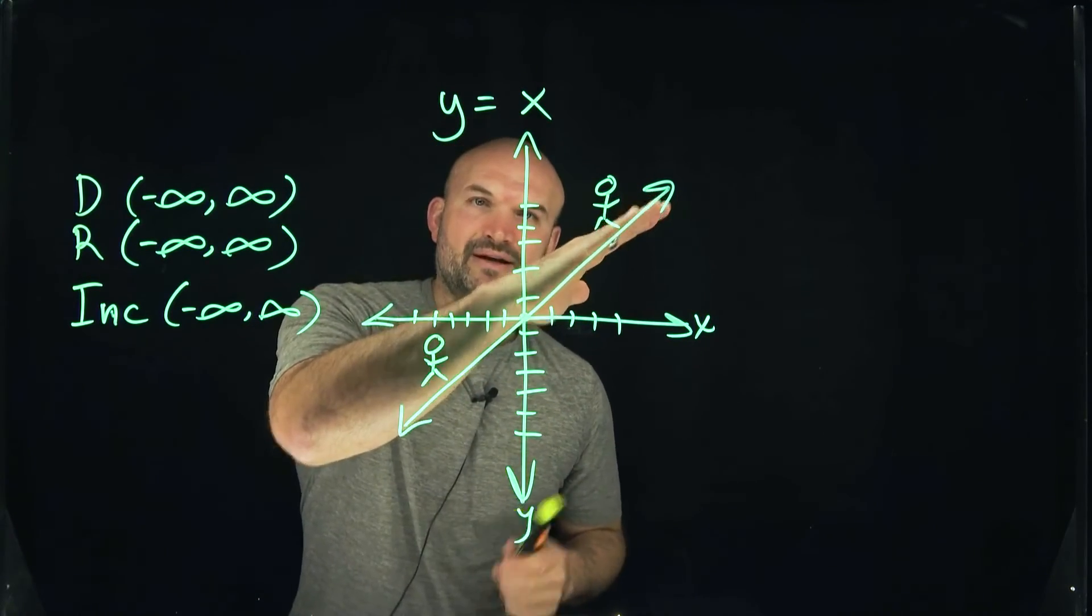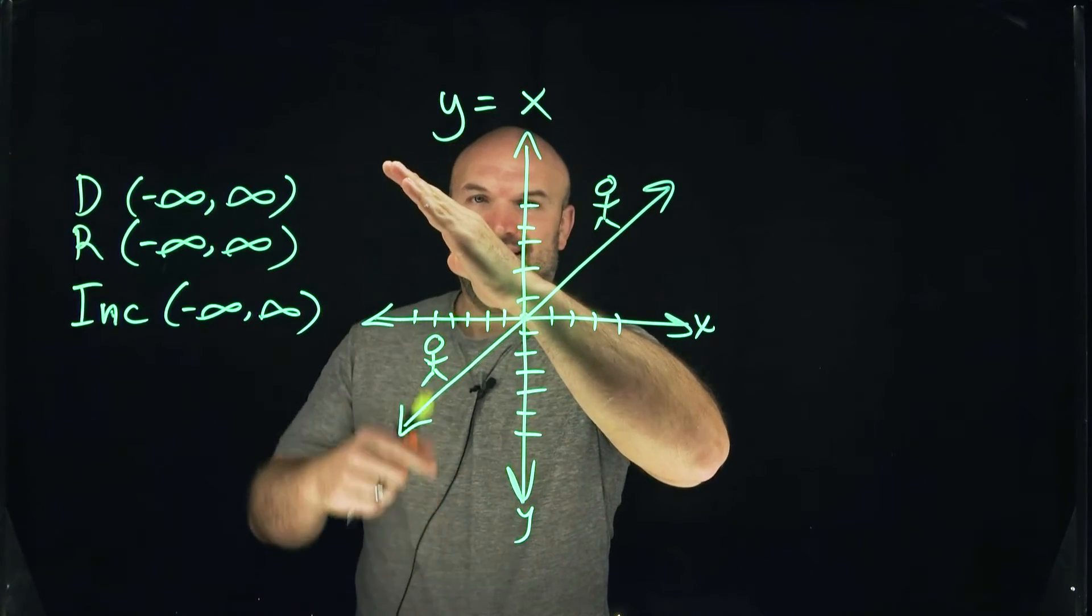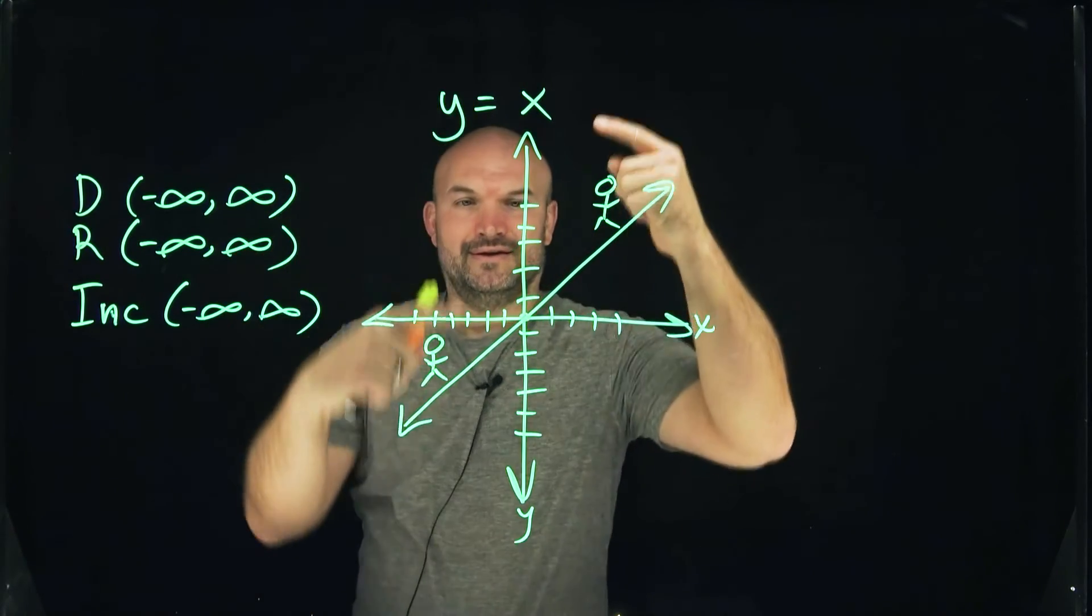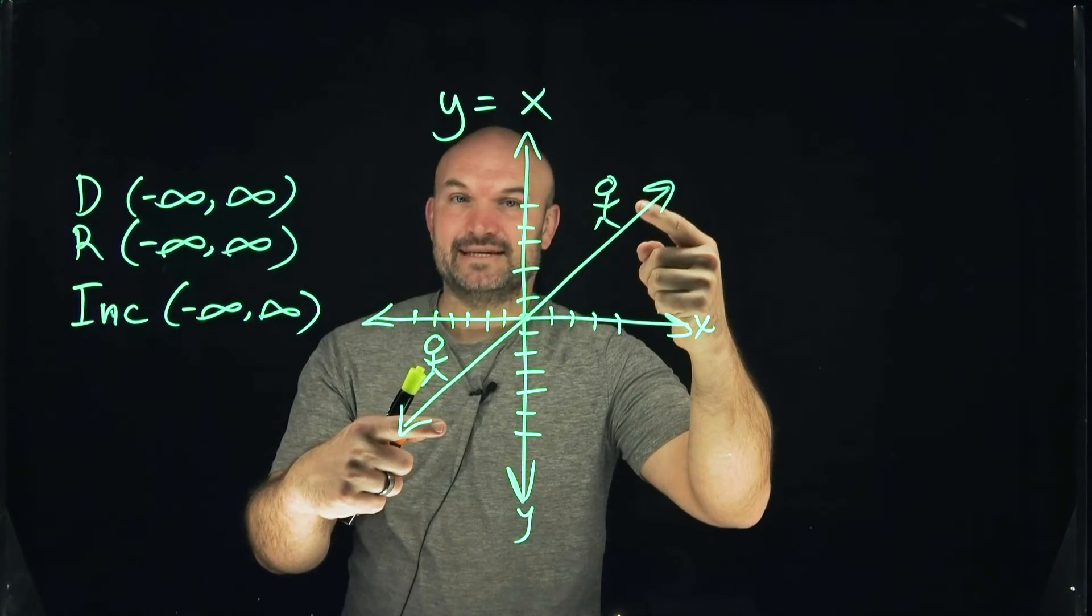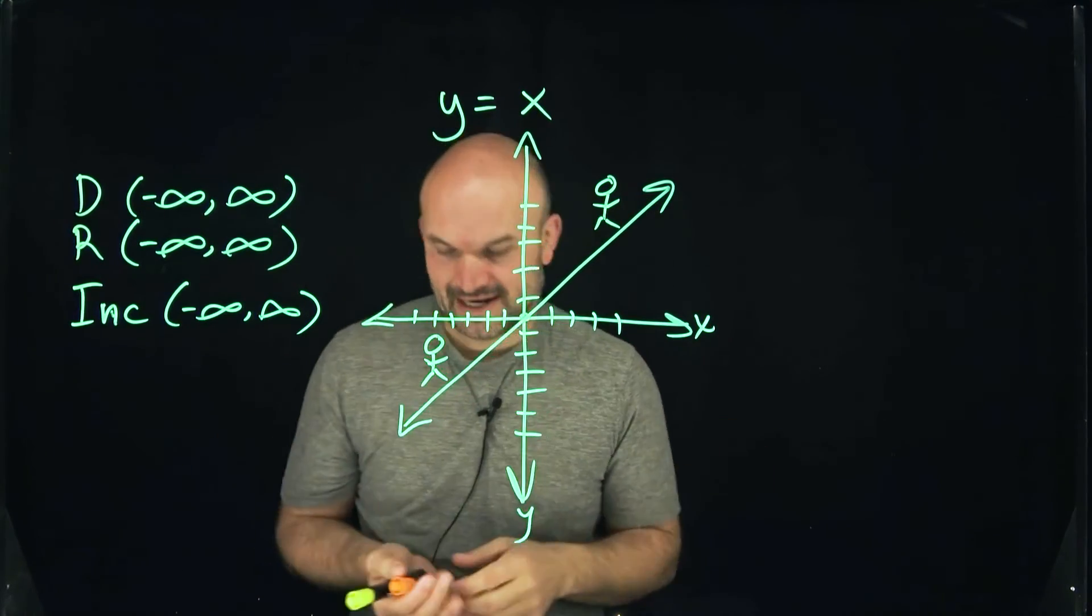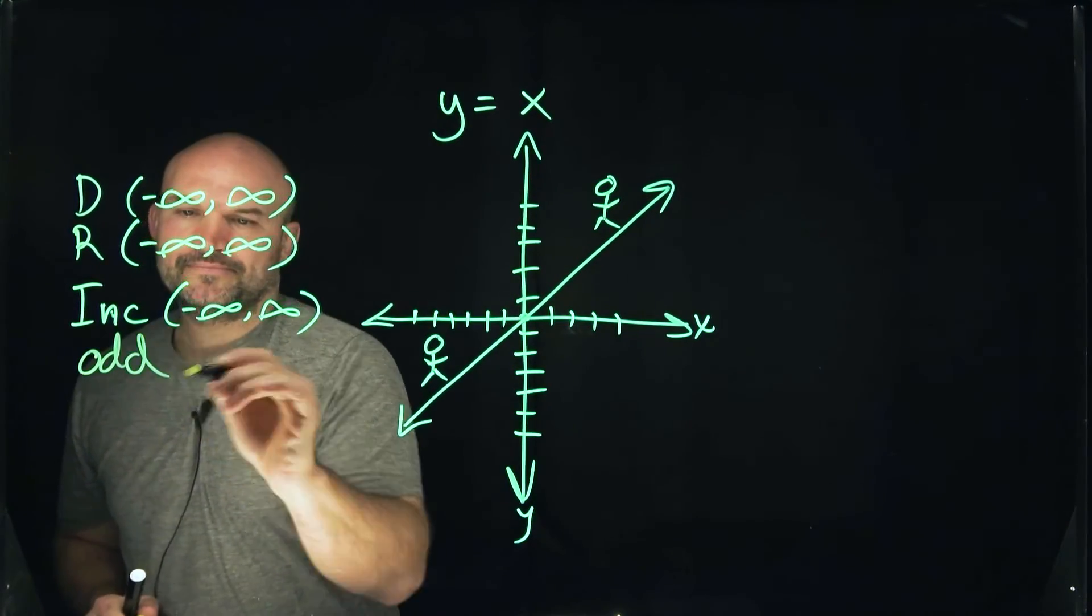If we flip it about the x-axis, we're going to get the exact same graph. If it's not even or odd, we call it a neither function.